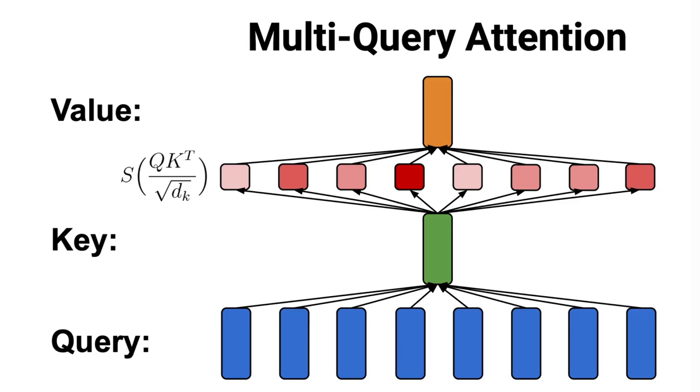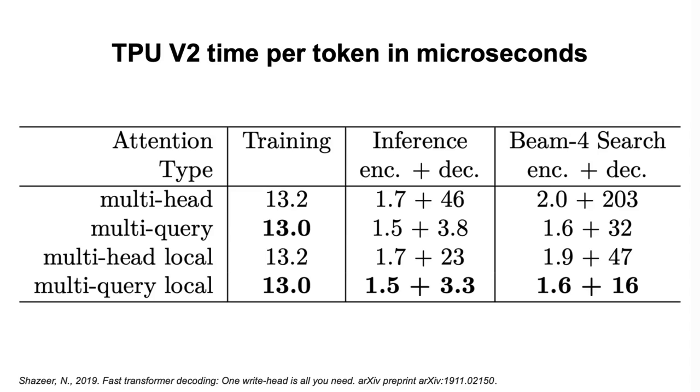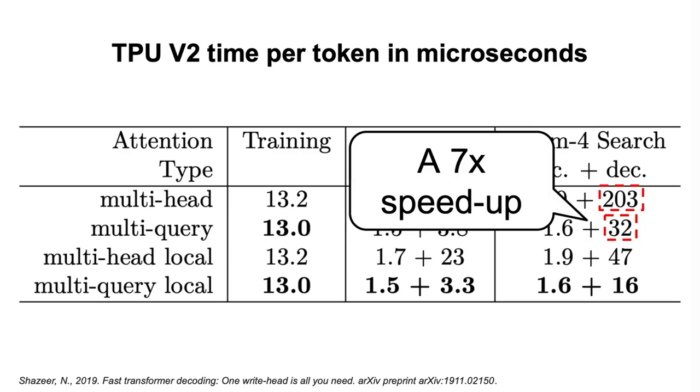So how does this attention mechanism compare to the multi-head attention one? The first thing we look at is obviously the computational time, and here in this table, we depict the TPU V2 time per token in microseconds. As we can see, the multi-query attention is able to achieve a significant speedup, reducing the time from 203 microseconds to 32 microseconds, so an approximately 7 times speedup.